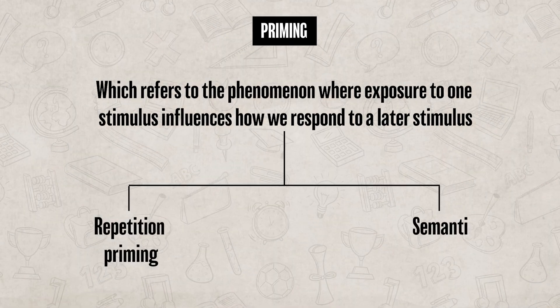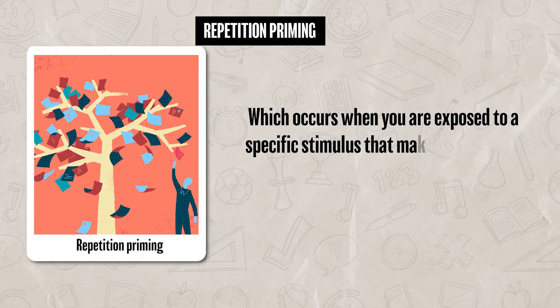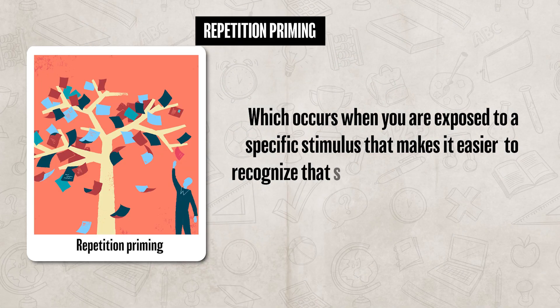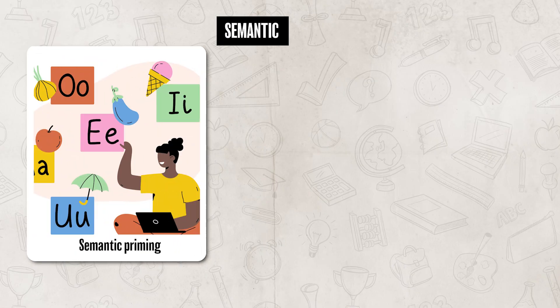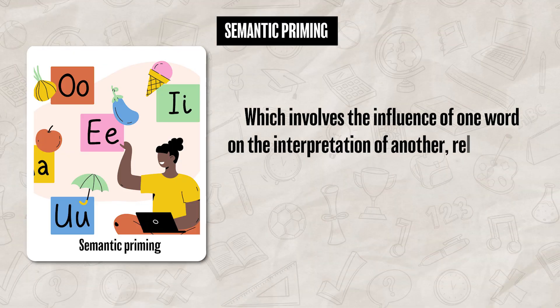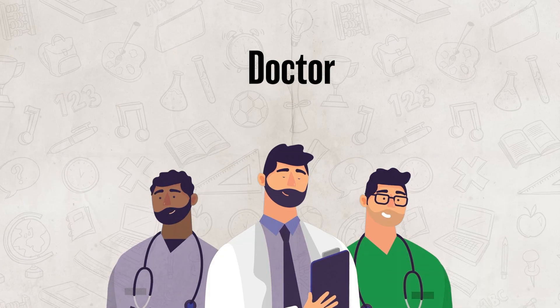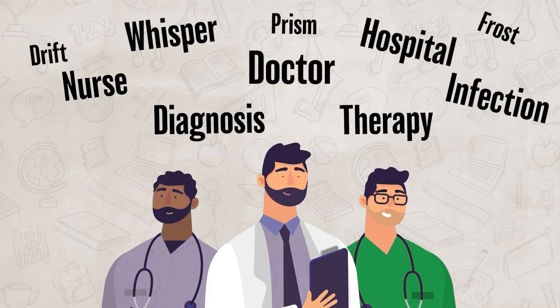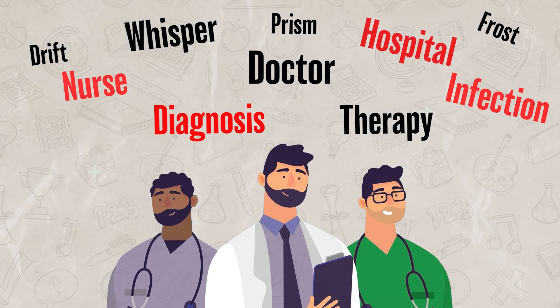There are two types of priming to be familiar with. The first is repetition priming, which occurs when you are exposed to a specific stimulus that makes it easier to recognize the same or similar stimulus later on. The second type is semantic priming, which involves the influence of one word on the interpretation of another related word. For example, if we were talking about doctors and I showed you the word 'doctor,' then showed you a bunch of other words, you're more likely to quickly recognize related words like 'nurse' or 'hospital,' because the first word primed your brain to look for related concepts.